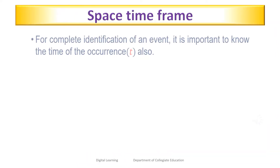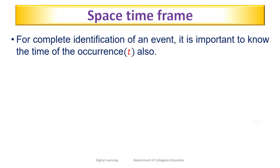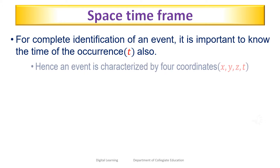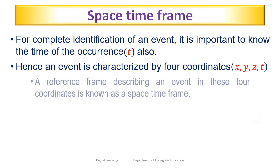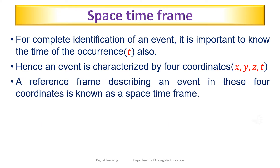For complete identification of an event, it is important to know the time of occurrence also. Hence, an event is characterized by four coordinates: x, y, z, and t. A frame of reference describing an event in these four coordinates is known as a space-time frame.